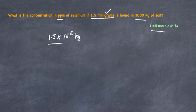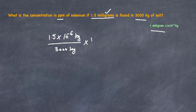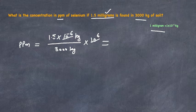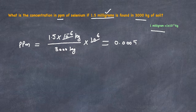So 1.5 milligrams is 1.5 multiplied by 10 raised to power negative 6 kilograms, divided by the total mass of the solution which is 3,000 kilograms, multiplied by 10 raised to power 6. The 10⁻⁶ and 10⁶ cancel out, and we divide 1.5 by 3,000, giving us 0.0000005 PPM. This is the concentration of selenium in 3,000 kilograms of soil.